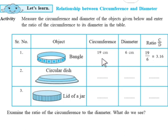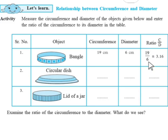The circumference of the bangle is 19 cm, diameter of the bangle is 6 cm, and the ratio of circumference to the diameter, that is 19 upon 6, is 3.16.